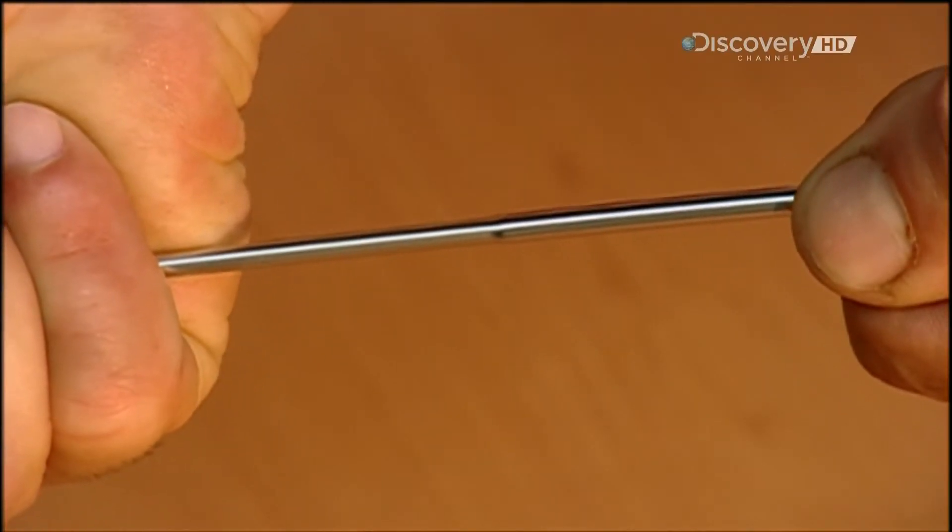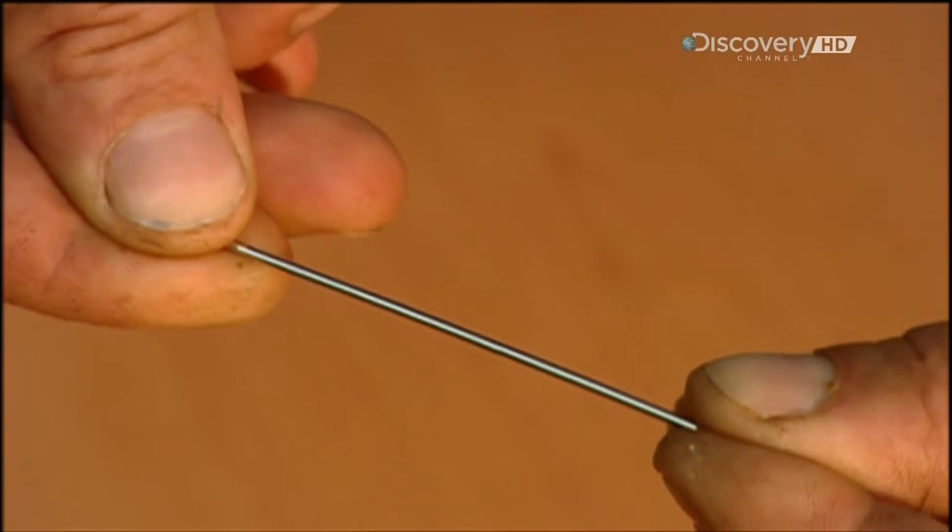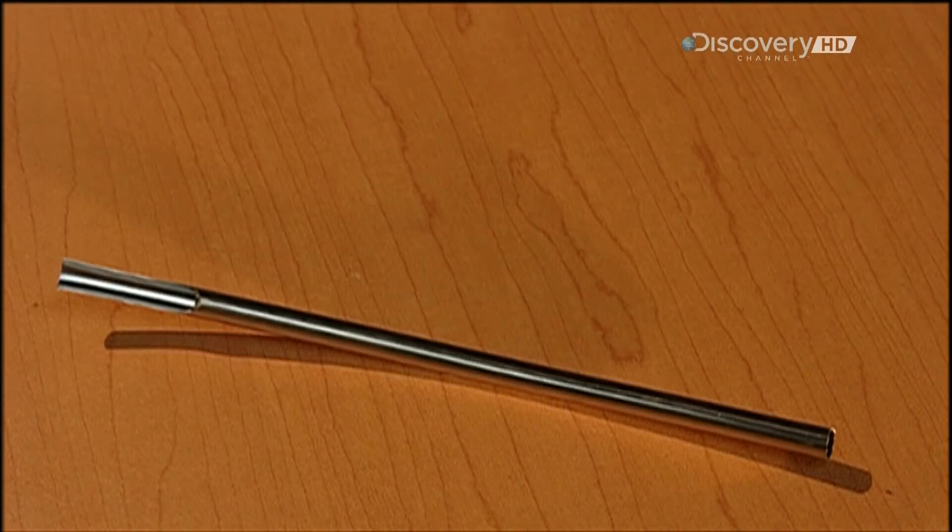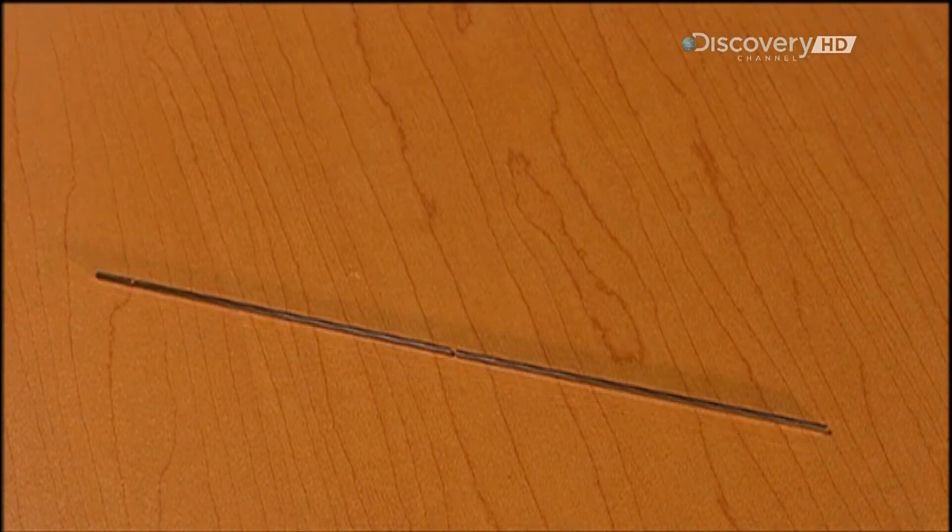But what makes the steel stiff enough to use is something called cold work, in which they press the tubing through a die several times. This also slims the tube dramatically, so now you have a thinner, tougher tube.